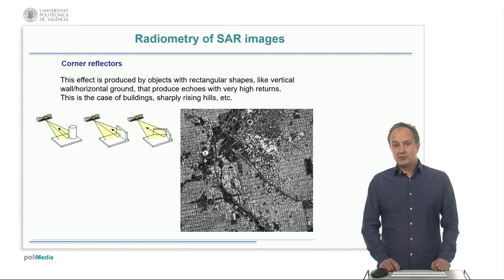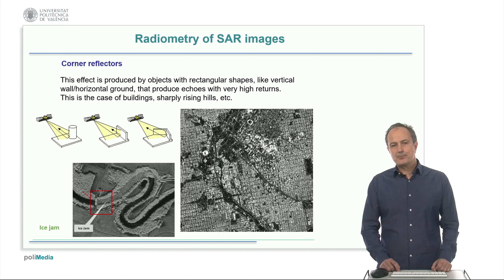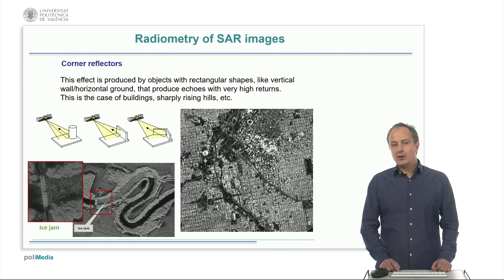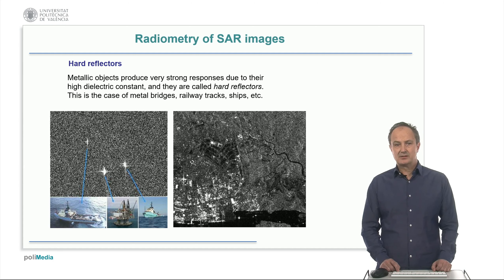The effect of corner reflectors is produced by objects with rectangular shapes. The vertical walls combined with horizontal ground produce echoes with very high returns. This is the case of buildings, sharp hills, and other similar objects. Here we can see two examples: one showing a typical urban landscape, another showing an ice jam where the edges of ice blocks act as corner reflectors. Usually, metallic objects produce very strong responses due to their high dielectric constant, and they are called hard reflectors. Examples include metal bridges, railway tracks, ships, or metallic towers as shown in these pictures.